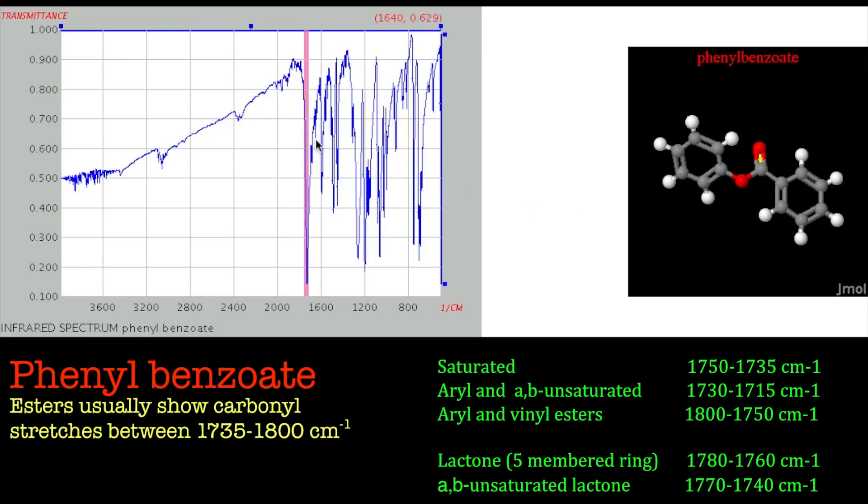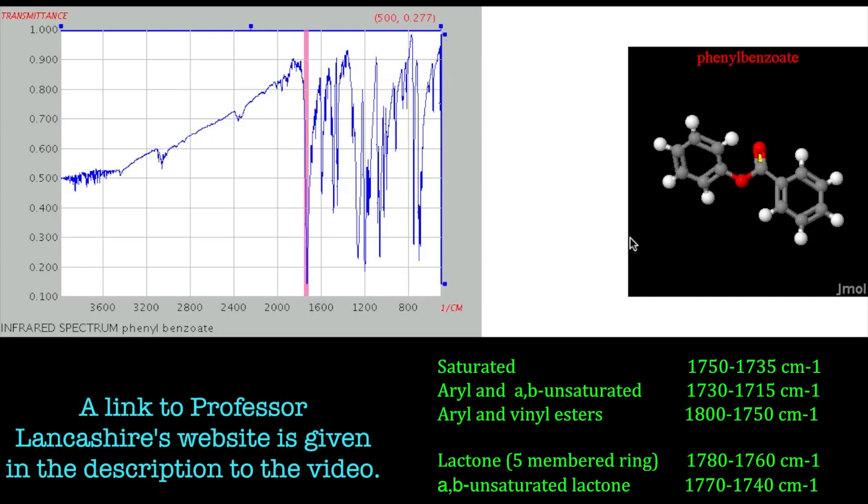And that'll be your carbonyl stretch for your ester, and that's coming at 1714 wavenumbers. So that's phenyl benzoate. So that's it for now. Do have a look at the theoretical video on infrared spectroscopy and look out for a few more of these examples as well. So bye for now.